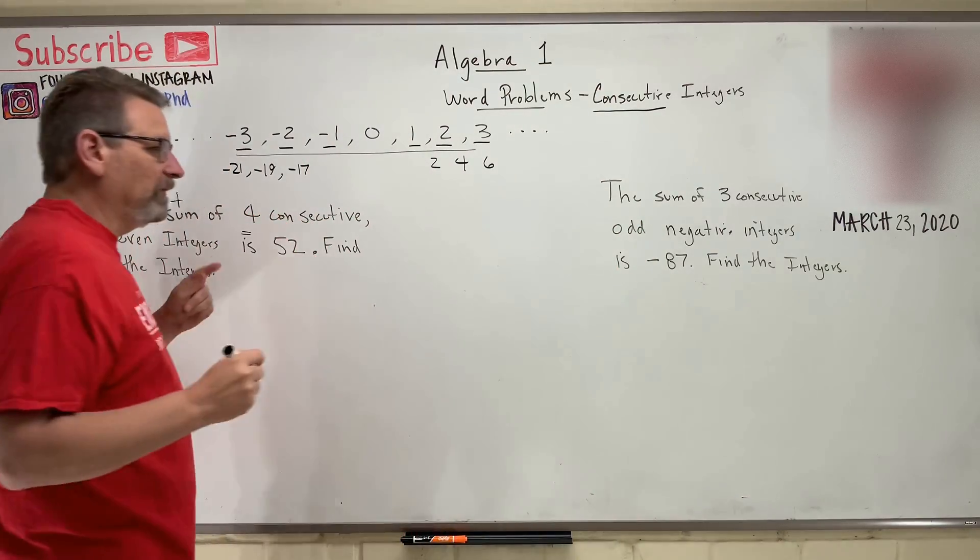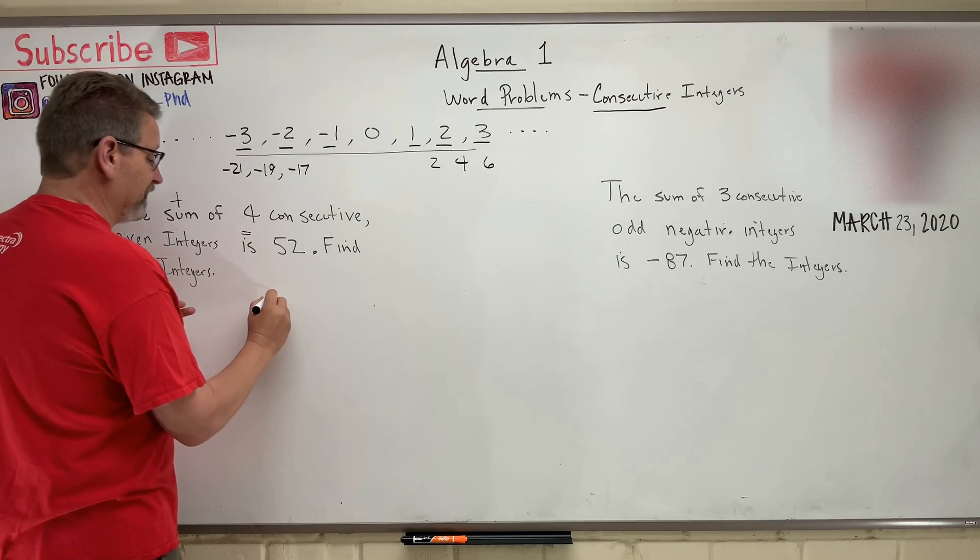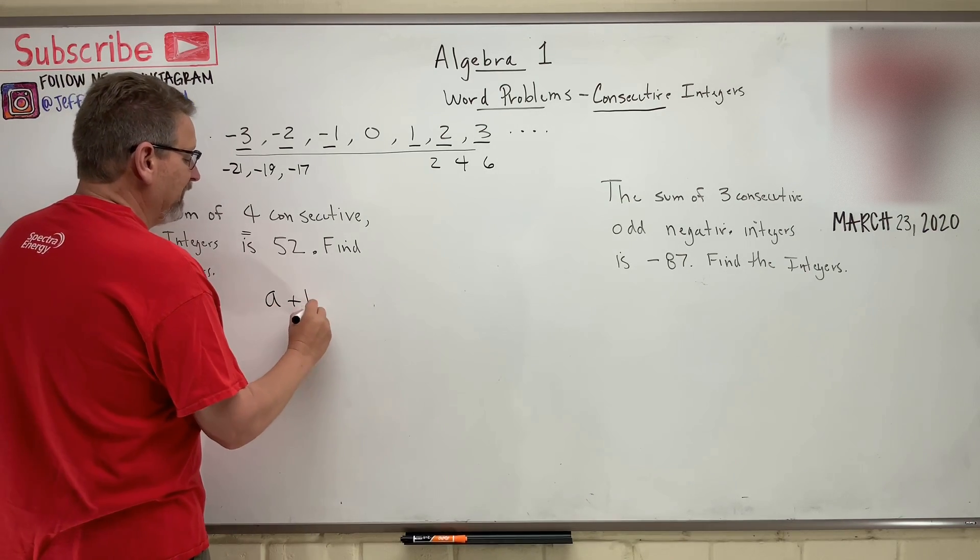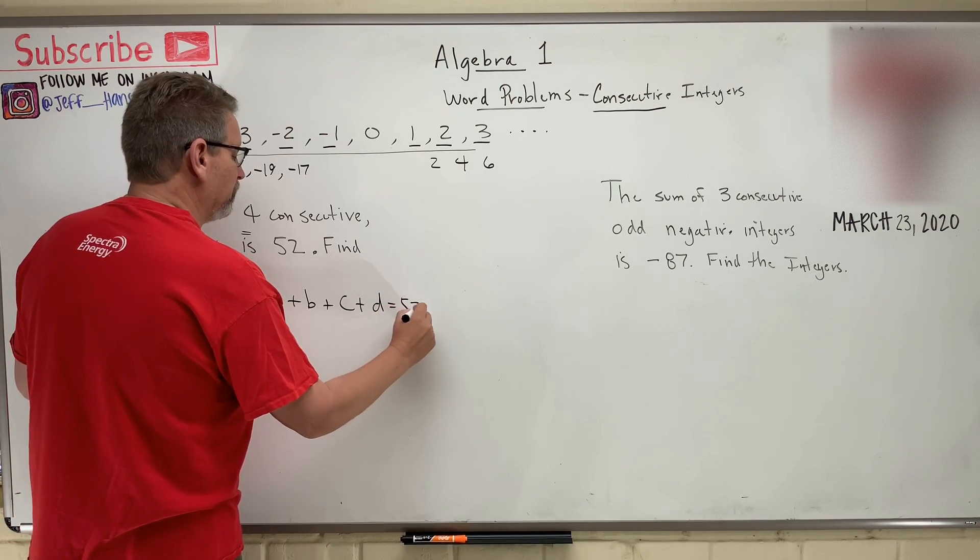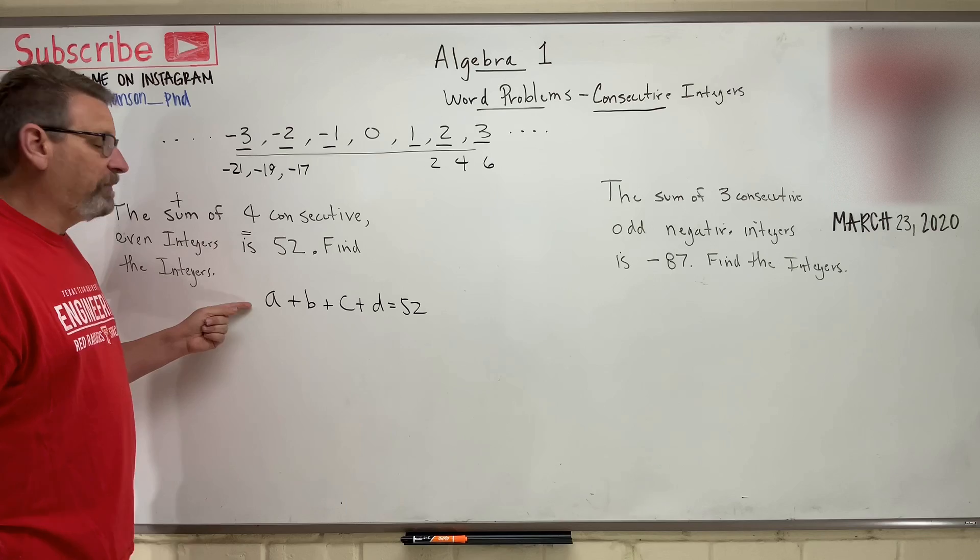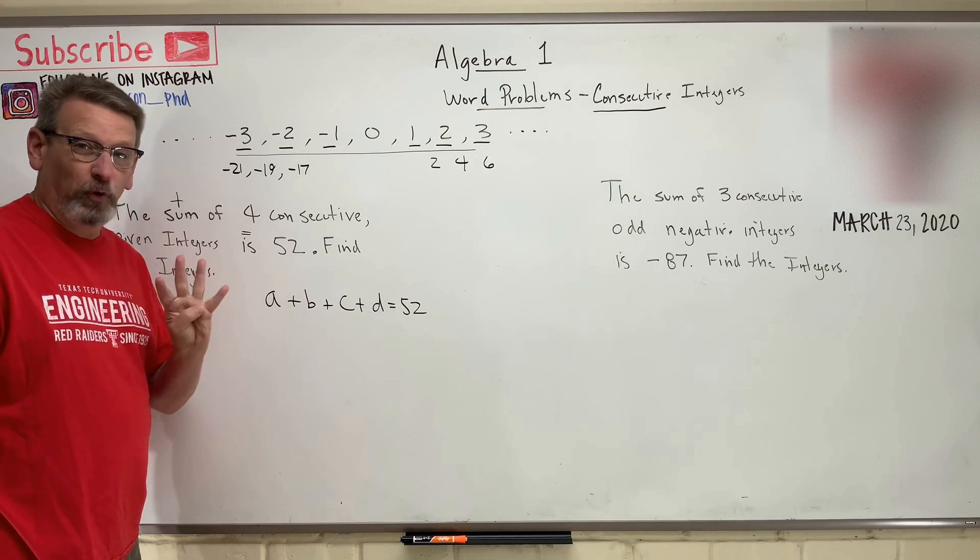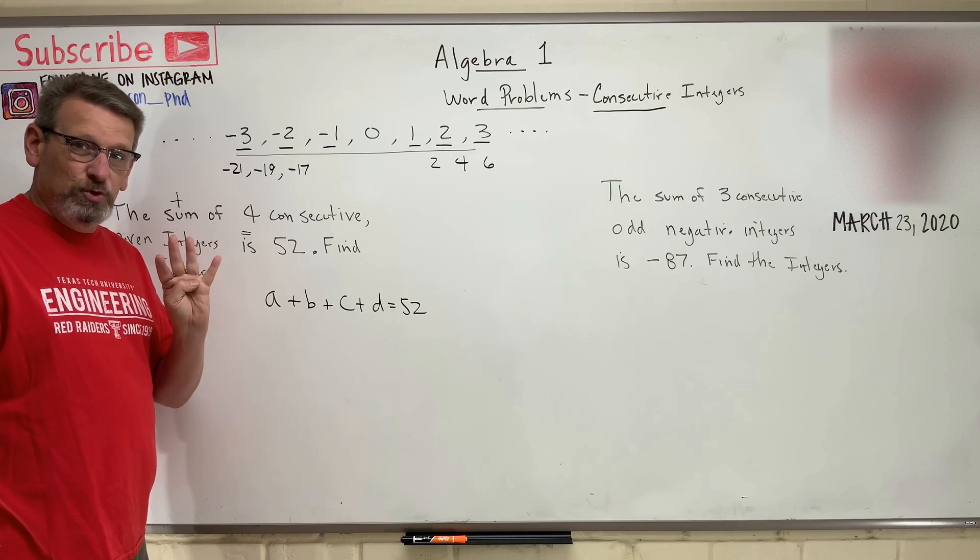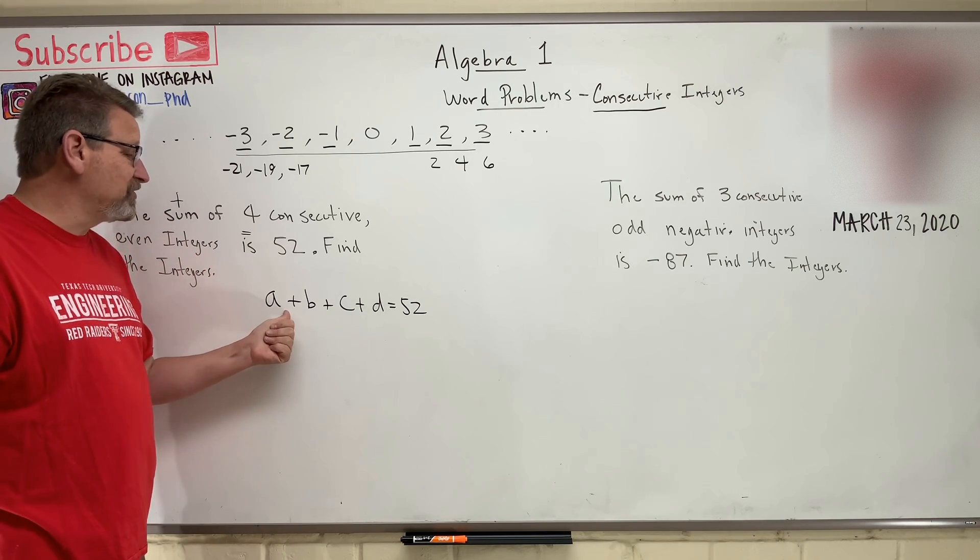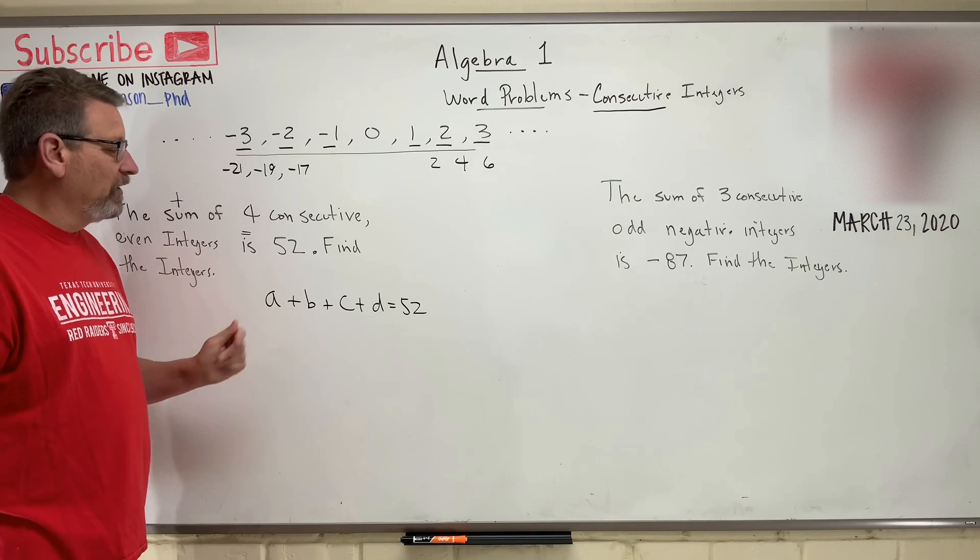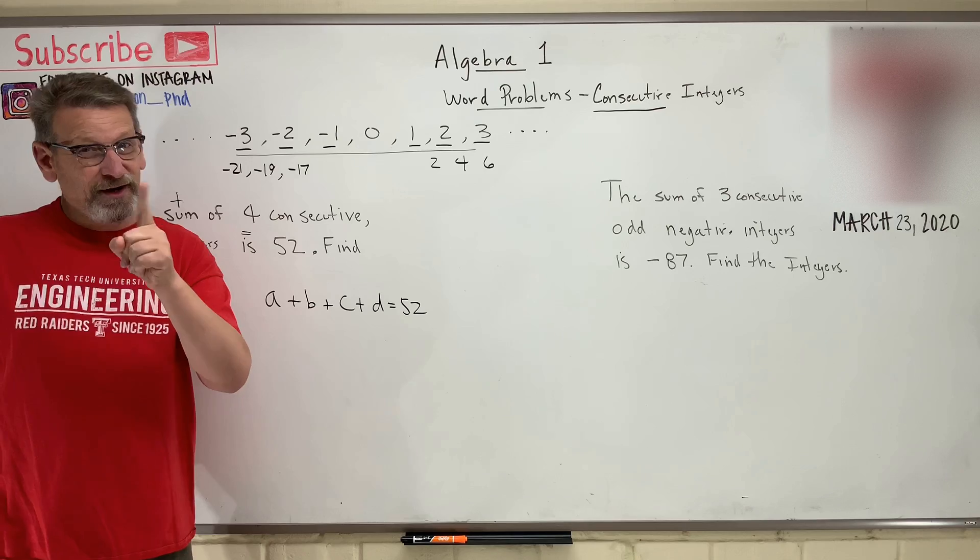Now, the weak student would be like this. Oh, well, there's four integers. Let's call it A, B, C, D is equal to 52, okay? The problem with this is it has one, two, three, four unknowns. If you have four unknowns, you have to use four equations to solve for those four unknowns. You can't solve that. You don't know what it is. So since we only have one equation, we only need one unknown, right?